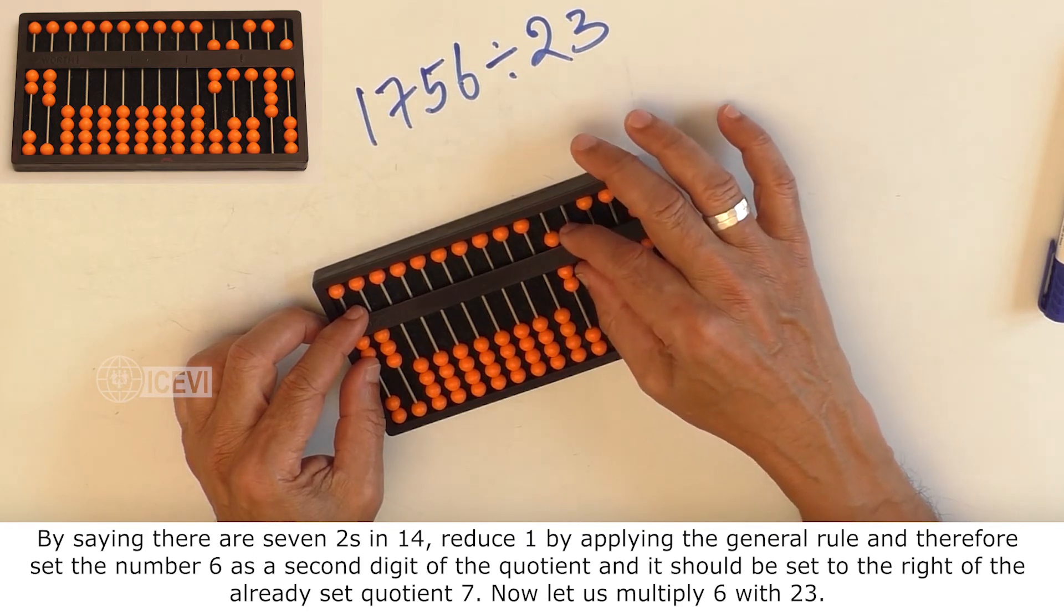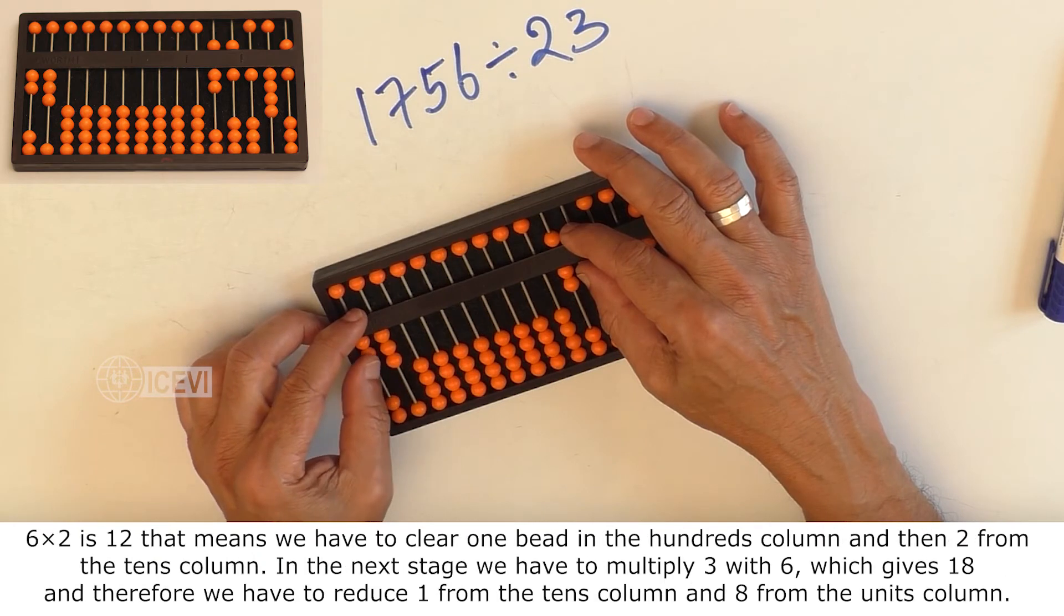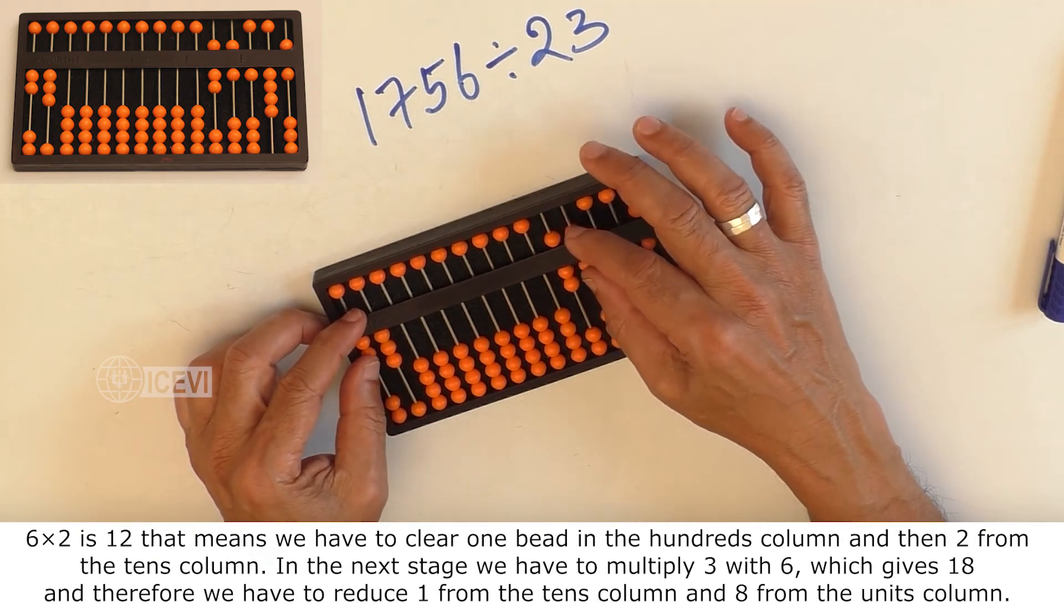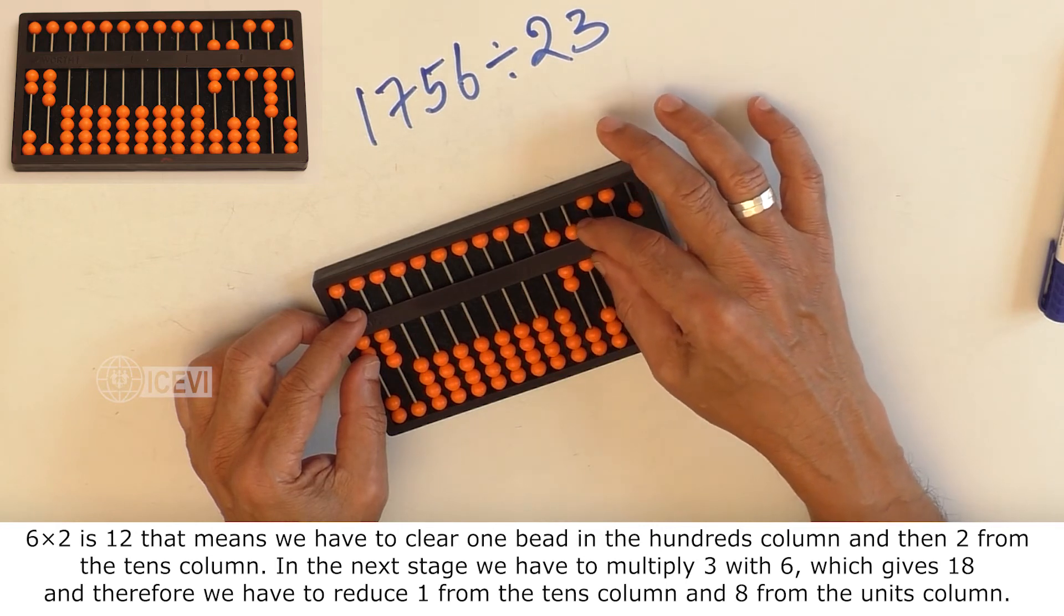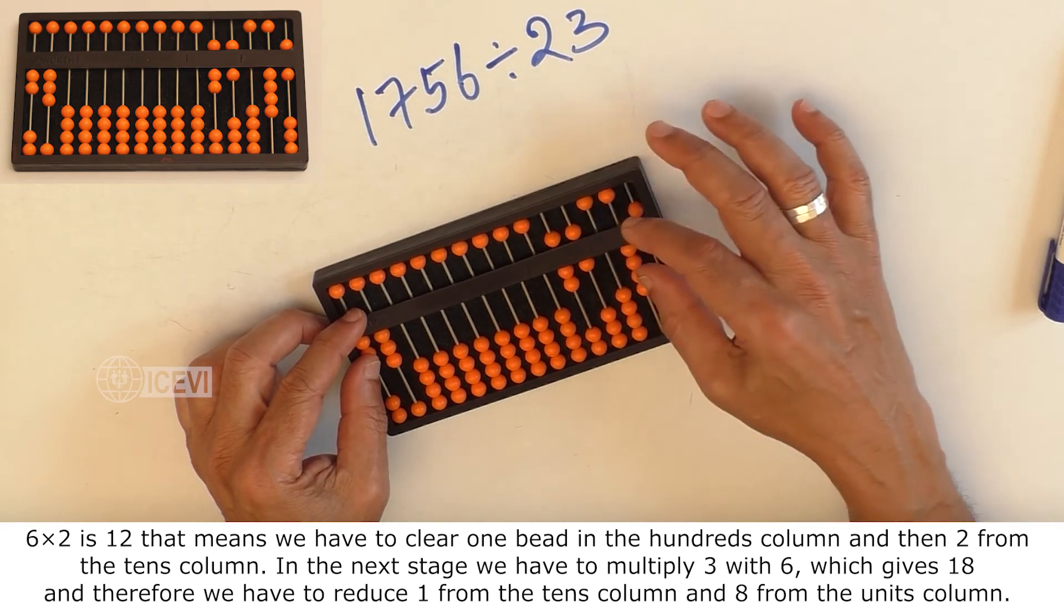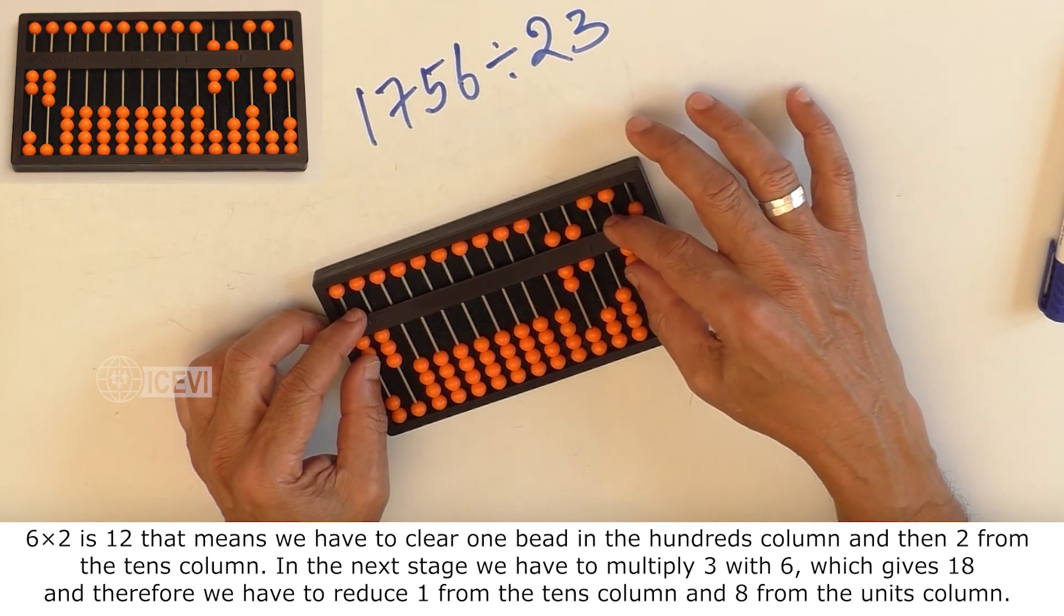It should be set to the right of the already set quotient 7. Now let us multiply 6 with 23. 6 multiplied by 2 is 12, that means we have to clear 1 bead in the hundreds column and then 2 from the tens column.